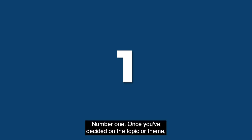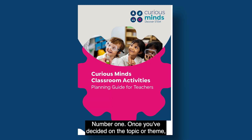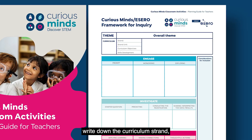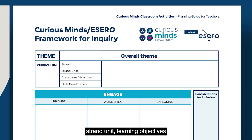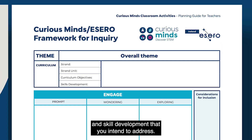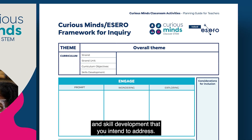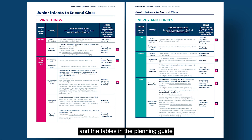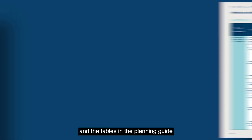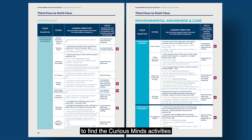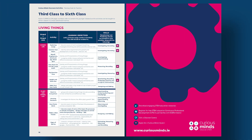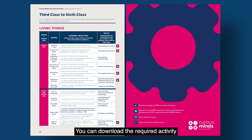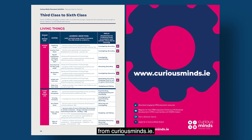Use these following 10 steps to help you. Number one: once you've decided on the topic or theme, write down the curriculum strand, strand unit, learning objectives and skill development that you intend to address. Use the curriculum links and learning objectives in the tables in the planning guide to find the Curious Minds activities that best suit your requirements. You can download the required activity from curiousminds.ie.